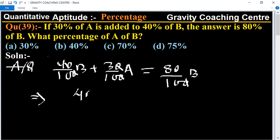...4B plus 3A upon 10 equals 8B upon 10. Now cancel the 10s.